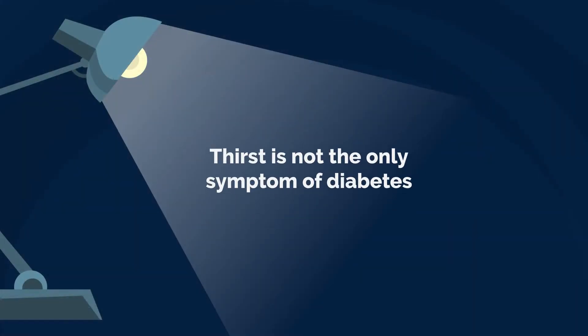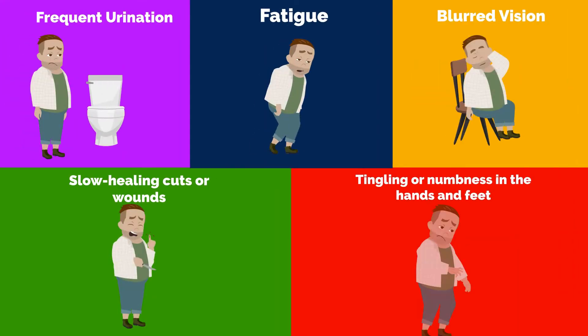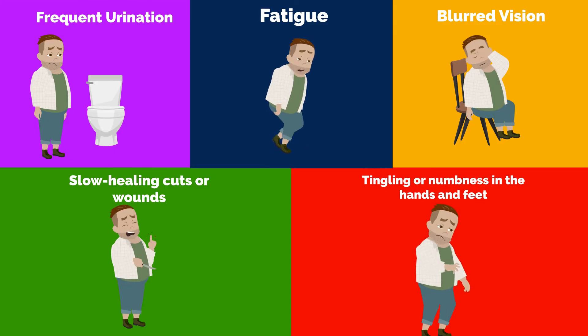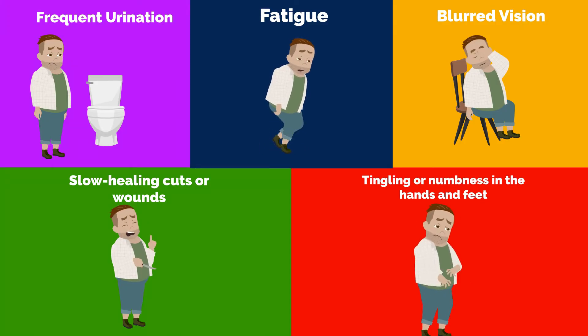It's important to understand that thirst is not the only symptom of diabetes. Other common symptoms include frequent urination, fatigue, blurred vision, and slow healing cuts or wounds.